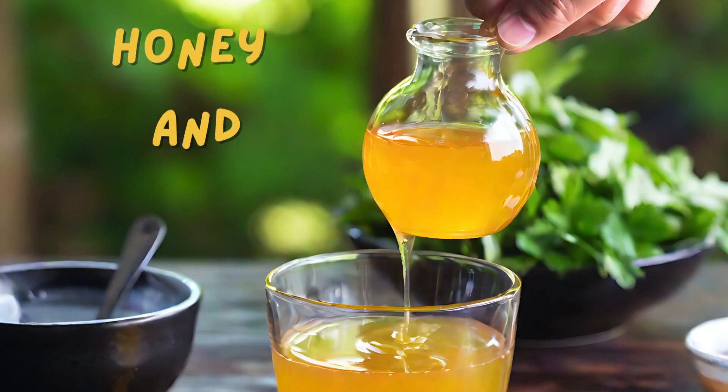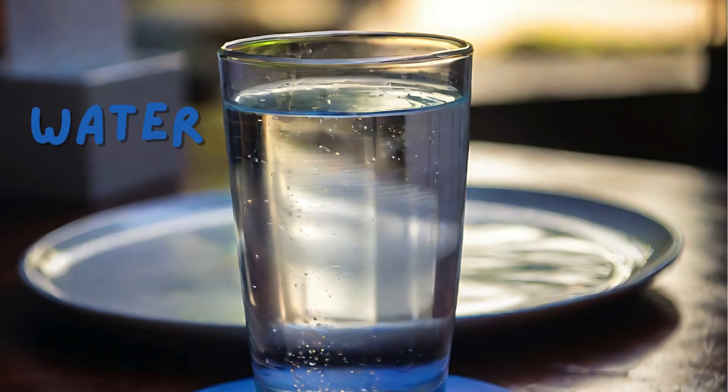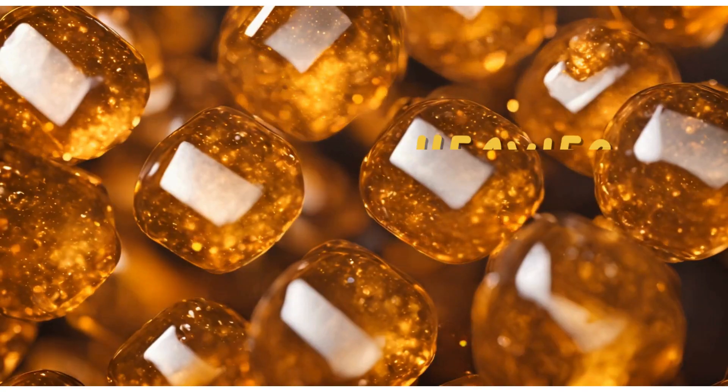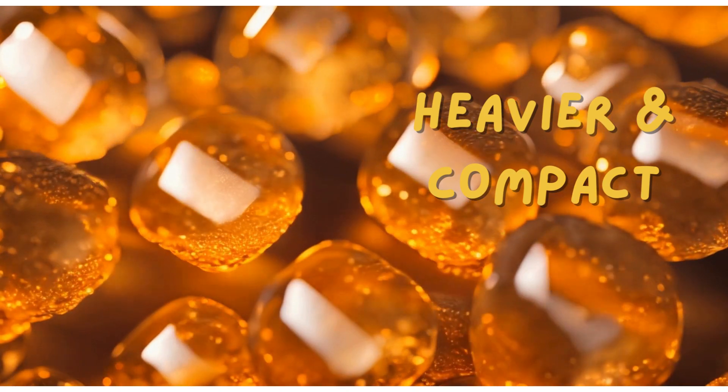Liquids like honey and syrup have a higher density than water and vegetable oil. This means they are heavier and more compact for their size.